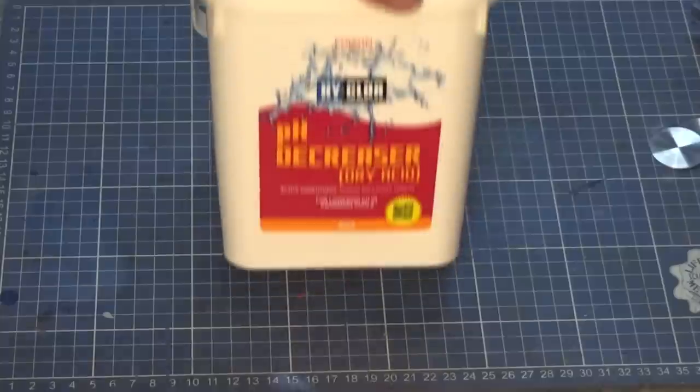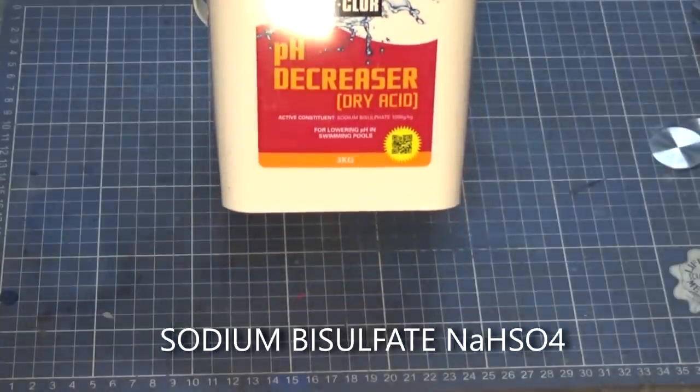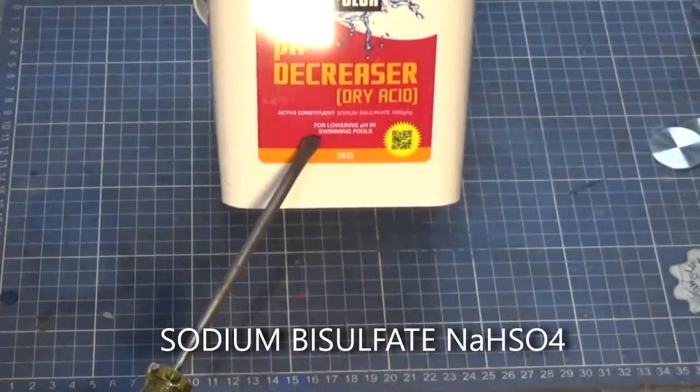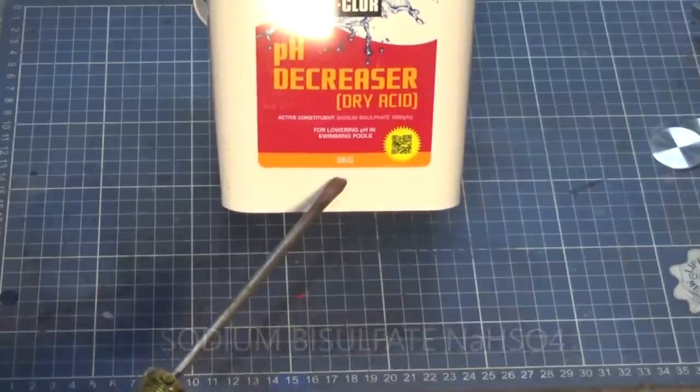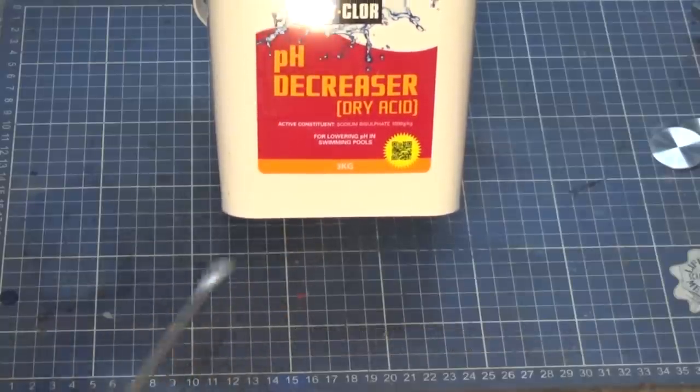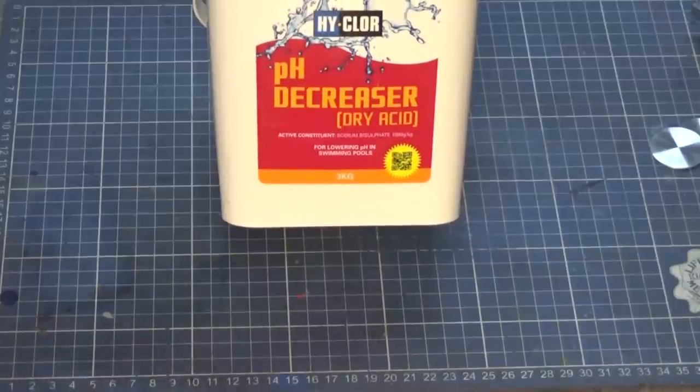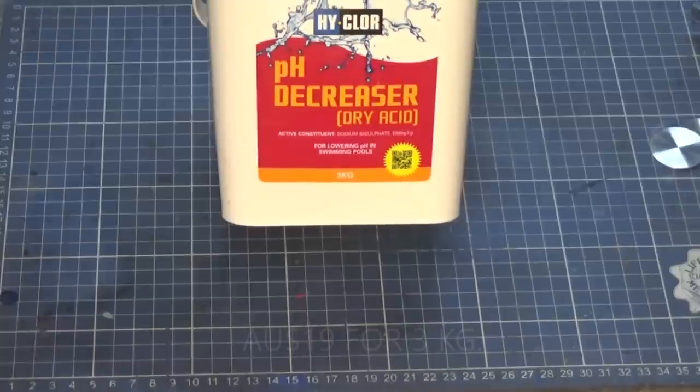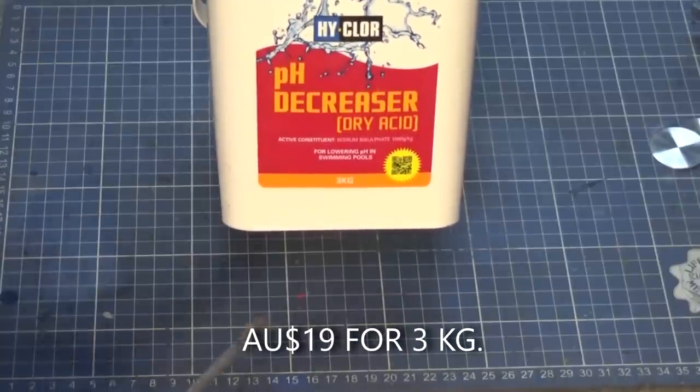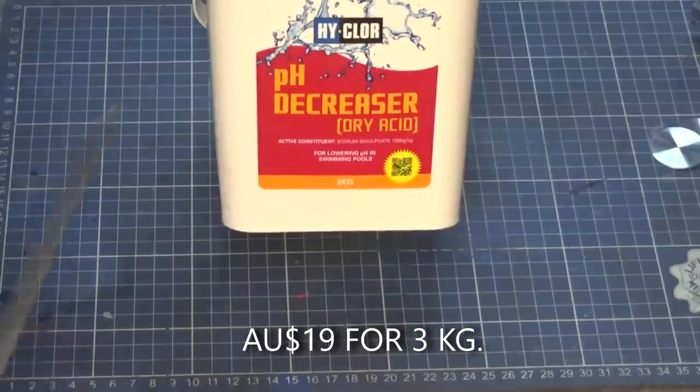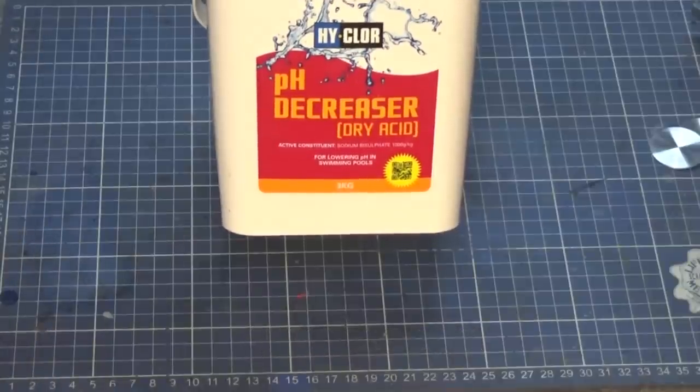But what I found out is that this stuff is an alternative. This is sodium bisulfate. It says on the label here, it's for lowering pH in swimming pools. This is a three kilo tub. I bought it down in my local pool supply company. And it's cheap, way cheaper than sulfuric acid.